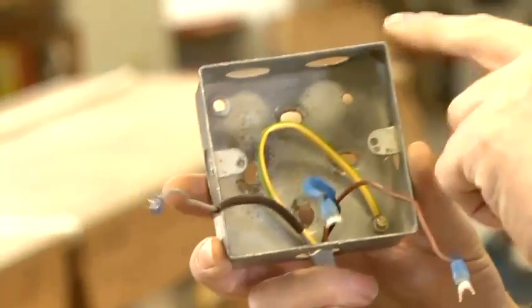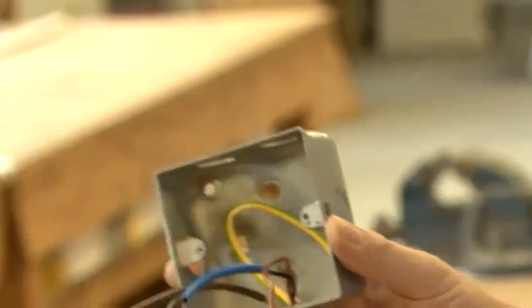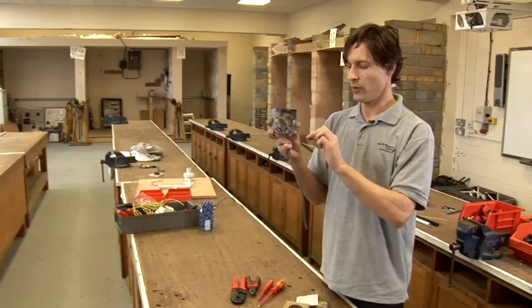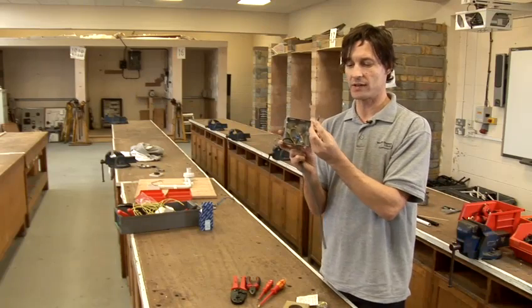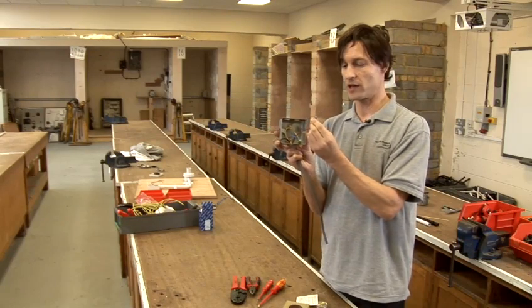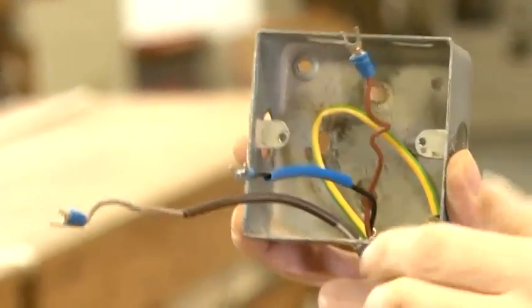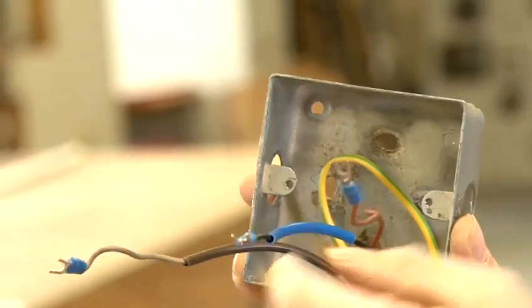We also have an earth that would go normally to a back plate for the back of this, but for the purposes of this video I'm just using a standard metal box. I've also crimped on spade connectors, spade crimps. This is a more professional job because actually wrapping them around the screw won't help the connectivity.